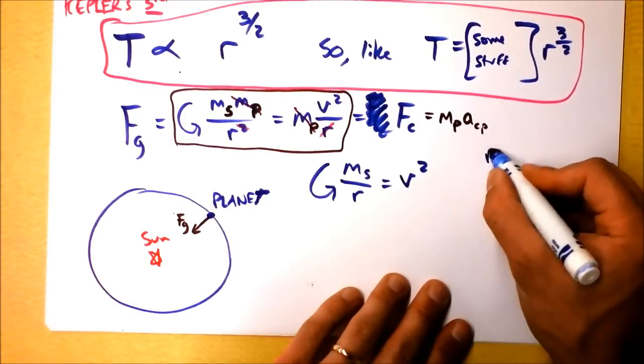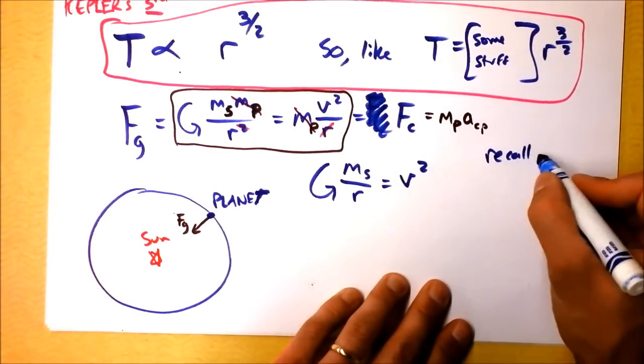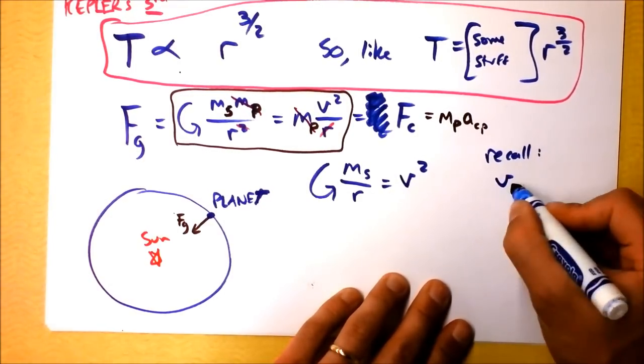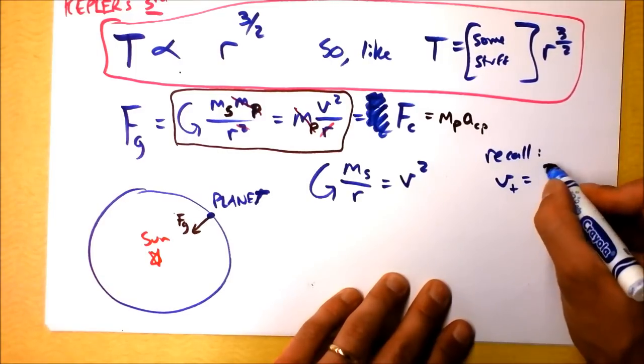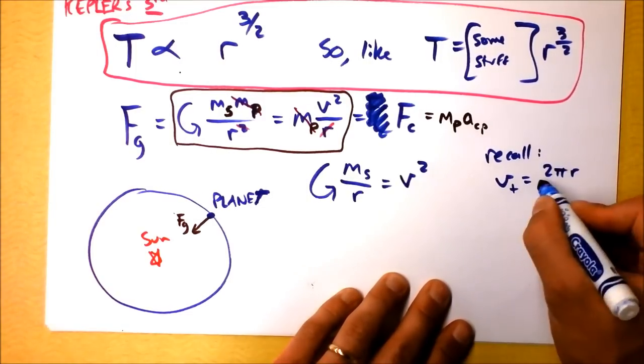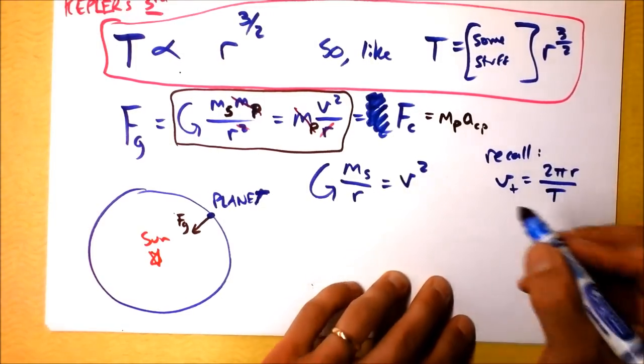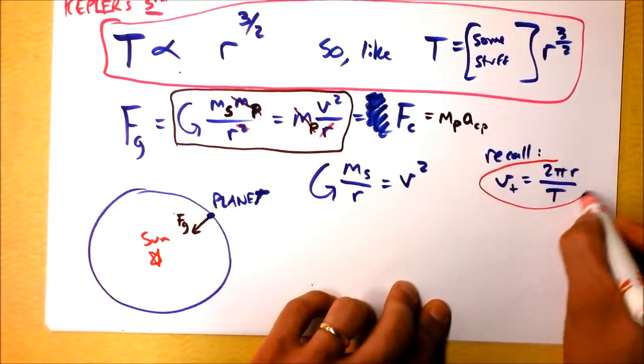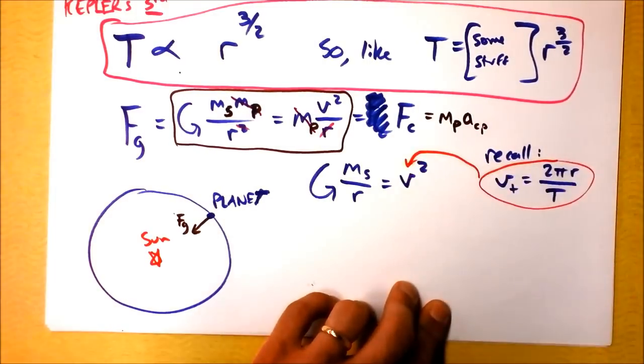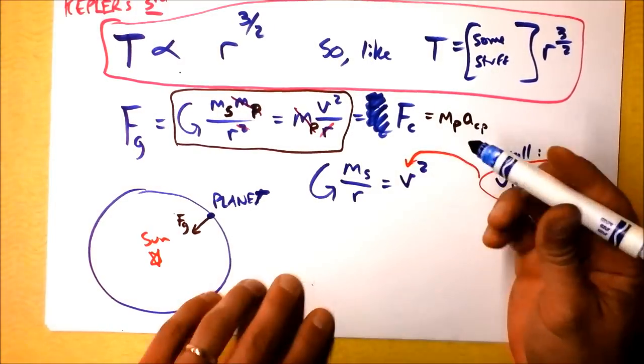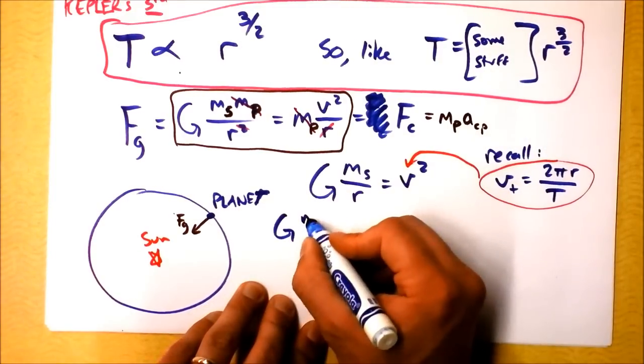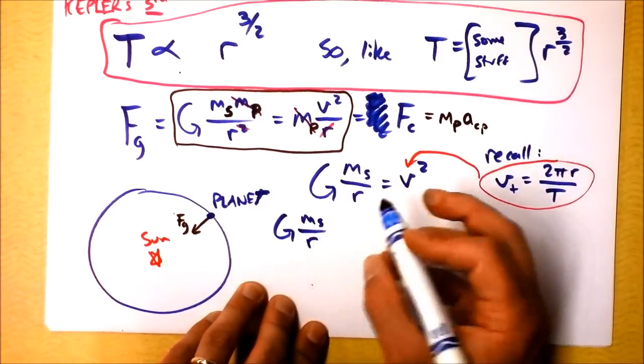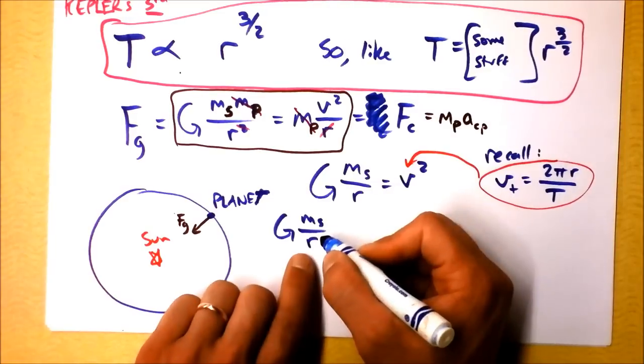Now, you remember that velocity. Do you remember anything about velocity? Recall that tangential velocity is, well, how far something goes is 2 pi r, that's circumference. And then we're going to divide that by period. So I'm going to plug this in. Ready? Right here. Let's see what we get. And we'll see. G times the mass of the sun divided by the radius. What radius?